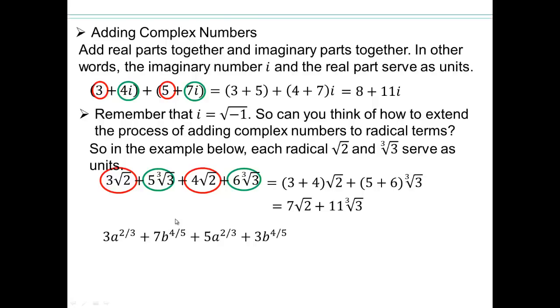Try this one on your own. Go ahead and see what you can do. Now you might have started to see the pattern. Let's circle the like terms. So those two are like terms and those two are like terms. So add them together. So the a to the 2 thirds and b to the 4 fifths are acting like units now. And so that would be the final answer.